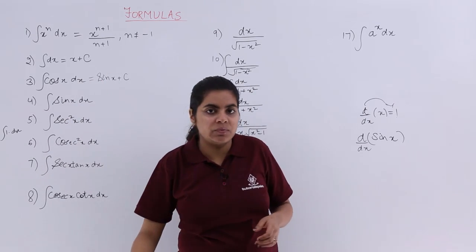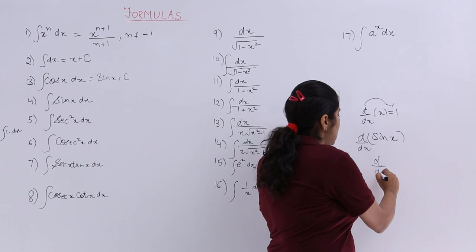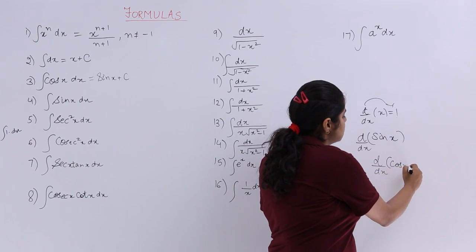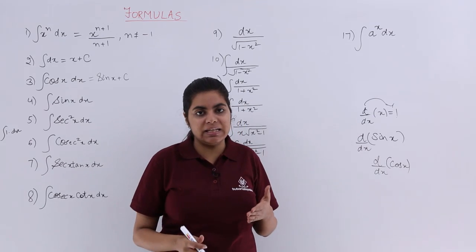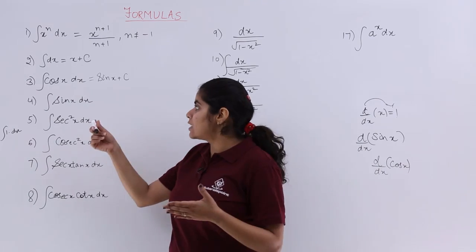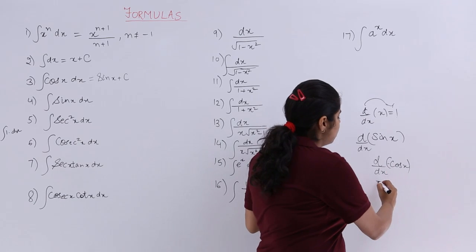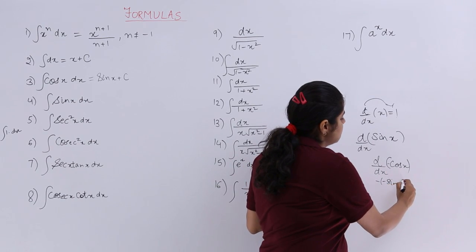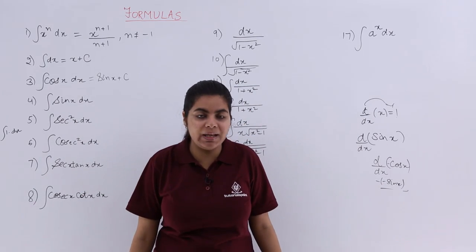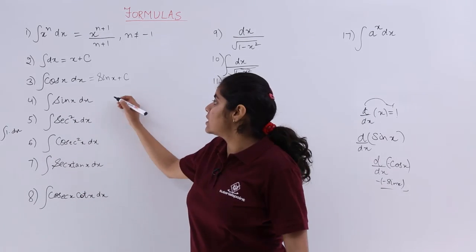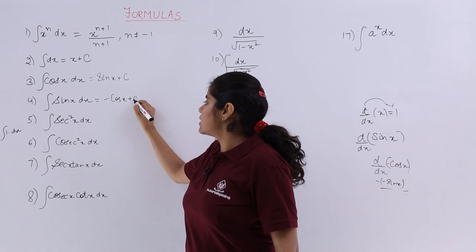Next, for sin x: whose differentiation is sin x? If I differentiate cos x, I get minus sin x — not sin x. But if I have minus cos x, it will be minus multiplied by minus sin x, giving me plus sin x. So plus sin x is obtained when you differentiate minus cos x. Therefore, integration of sin x equals minus cos x plus c.